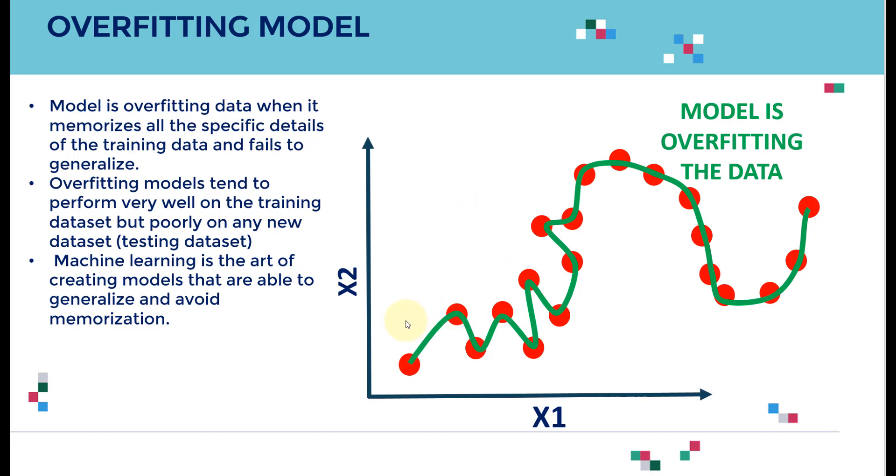These models are overfitting when they memorize all the specific details of the training data and fail to generalize. Overfitting models tend to perform very well on the training data but very poorly on the testing data.